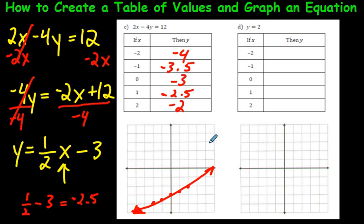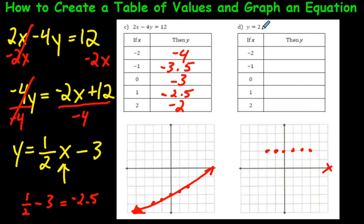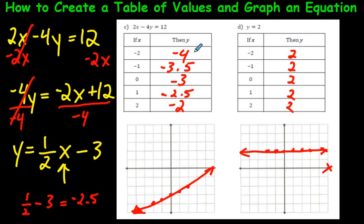This last one: y equals 2. Y is already by itself and there are no x's here at all. If y equals 2 at all times with no change, that means y is 2 everywhere — no matter what x is, y is always 2. It's never cutting through the x-axis; it's always staying at y equals 2 along this horizontal line. This table of values didn't need any difficult math work. Sometimes a textbook will give you a tricky curveball like this.